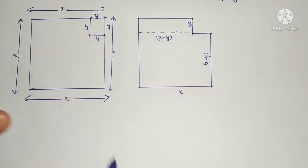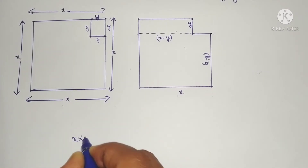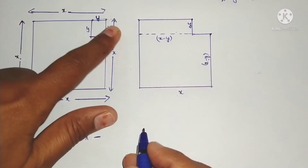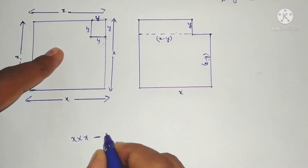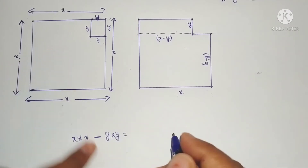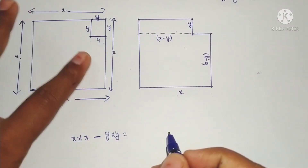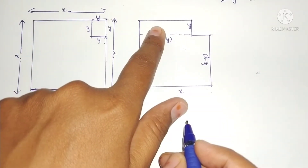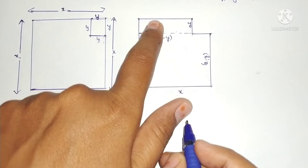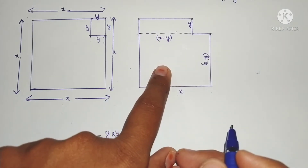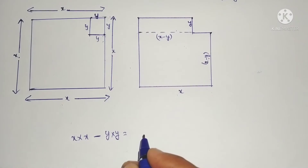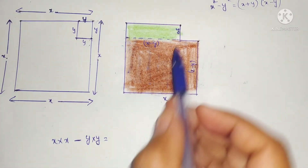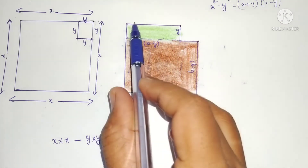The total area of the square is x into x, and from this we are subtracting this area — this smaller square is side into side, y into y. This equals the remaining area, which is the area of this rectangle and the area of this rectangle.